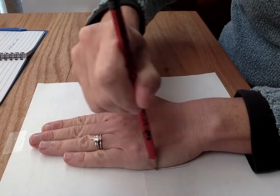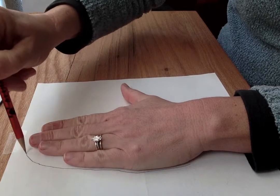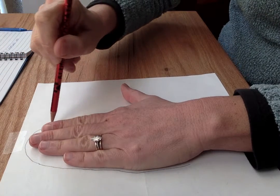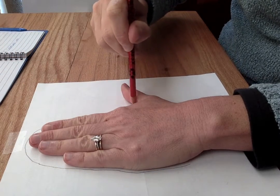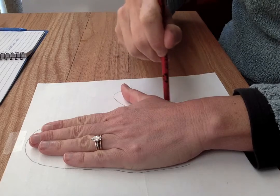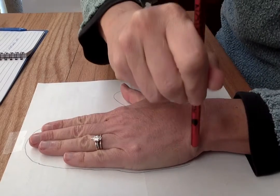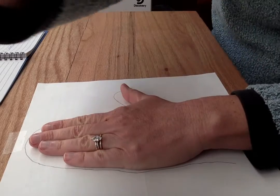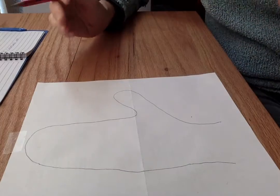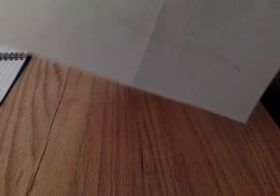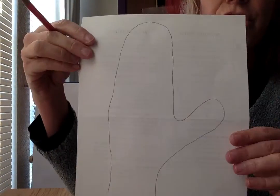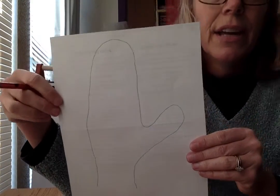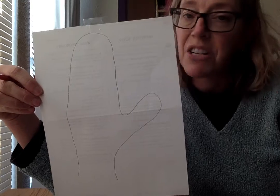And then I'm gonna trace and I'm gonna go around my fingers, arrededor, and around my thumb. So when I'm done I have a mitten shape. If you can draw it without tracing your hand, that's fine.